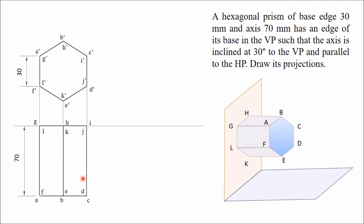Now in the second stage, or final stage, you have to tilt this solid by 30 degrees — that means you have to tilt the axis of this solid by 30 degrees. In place of tilting the axis, you can tilt any of these sides because all the sides are parallel to the axis. So you can tilt either anticlockwise keeping I, J on the xy line, or clockwise keeping G, L on the xy line — any one option you can take.